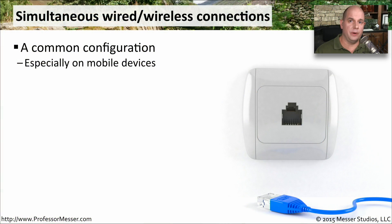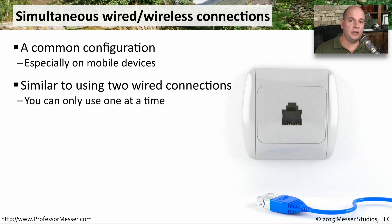A very common hardware configuration these days is for our devices to have both a wired Ethernet adapter and a wireless adapter in the same device. The question is which connection should we be using? If we plug into Ethernet, should we still be using our wireless connection? The challenge is that your operating system is only going to use one interface for a particular route, so it's going to choose either the wired or the wireless connection, and all of your traffic will flow through that particular interface.